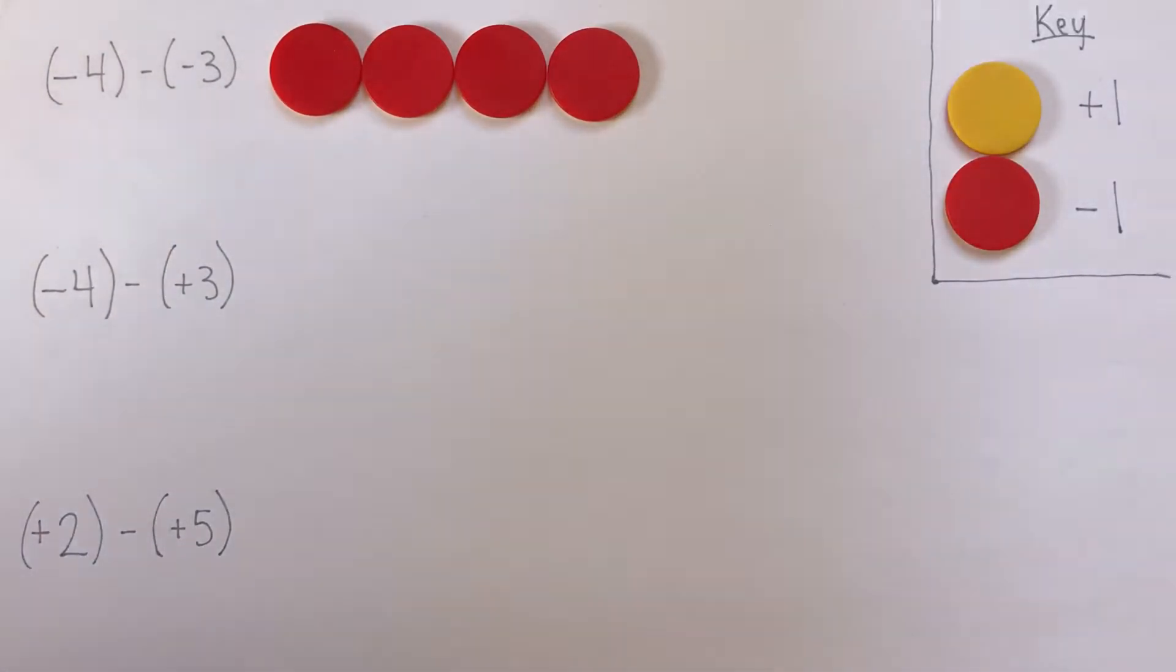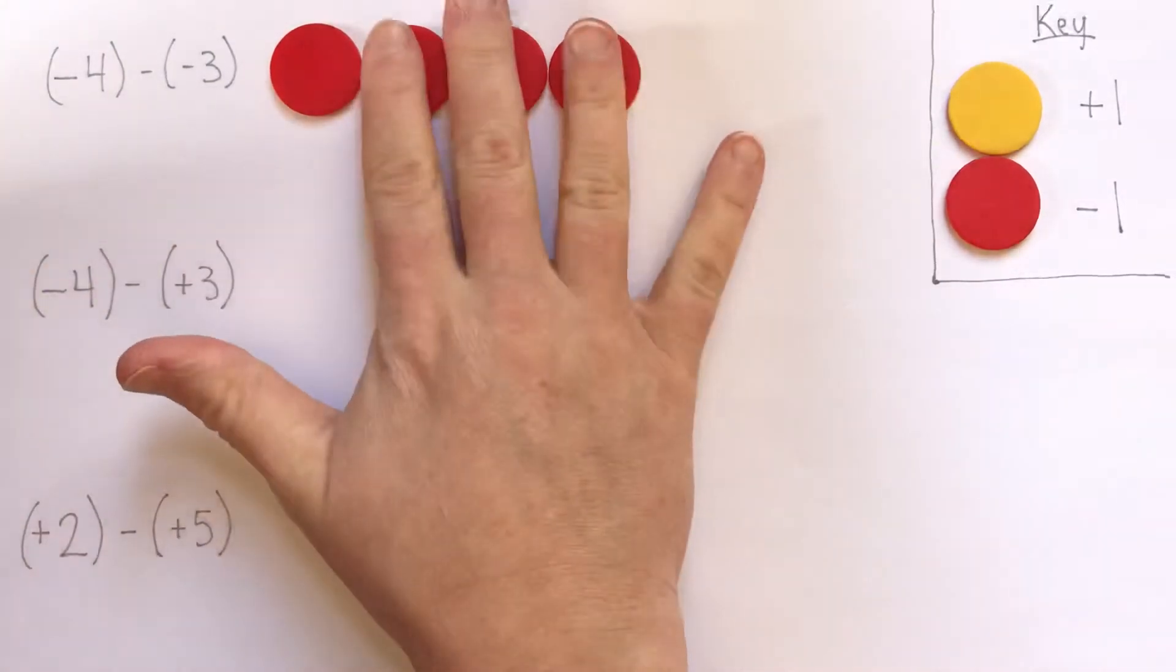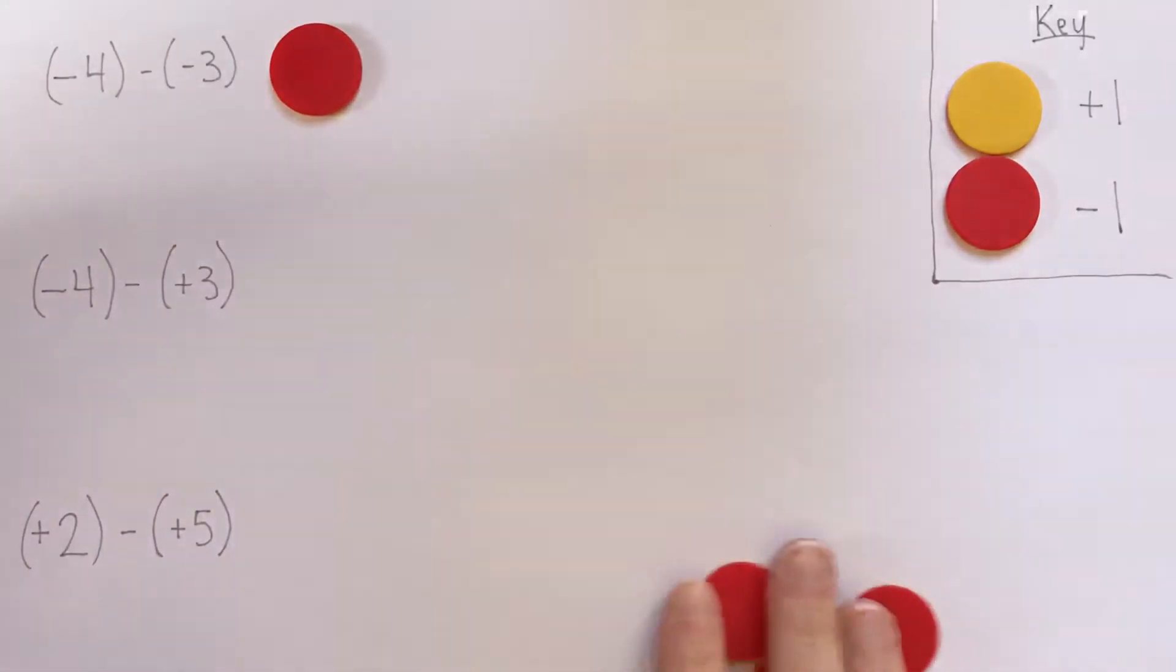And I'd like to take away negative 3. So here's my negative 3. I'll just take them right away. And we're done.